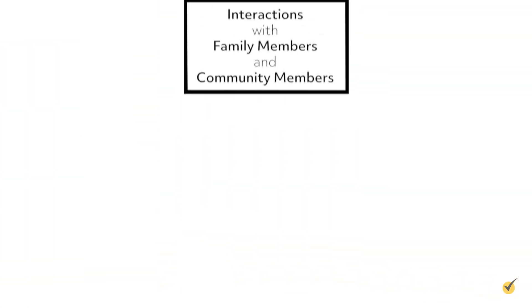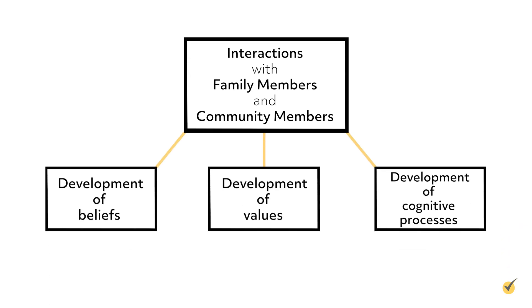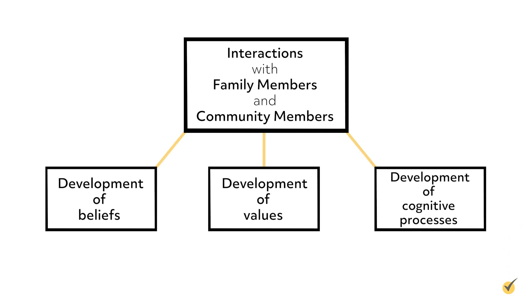Vygotsky and Piaget are often discussed alongside each other, though there are some key differences in their theories. For example, Piaget believed that all children go through a series of stages of development in a certain order. Vygotsky disagreed, theorizing that social and cultural influences affected development strongly, indicating that children of the same age might develop very differently from each other. According to Vygotsky's sociocultural theory of cognitive development, children develop their beliefs, values, and cognitive processes through their interactions with others, such as family members and others in the community.